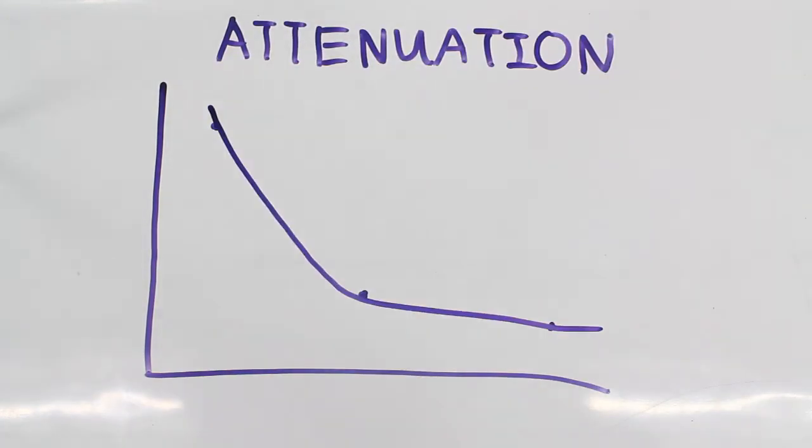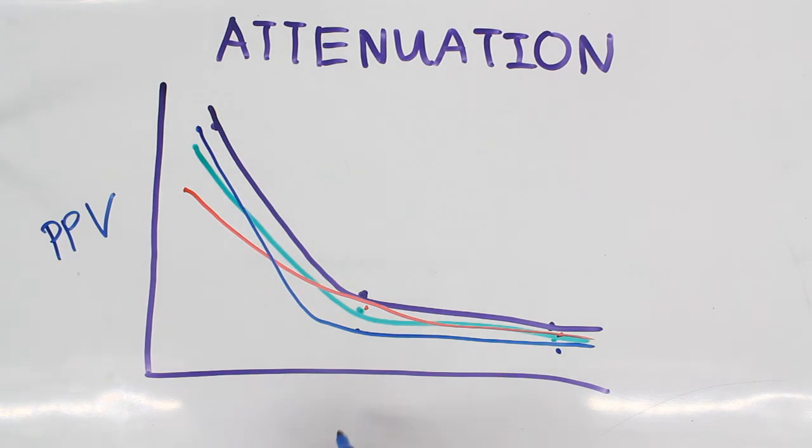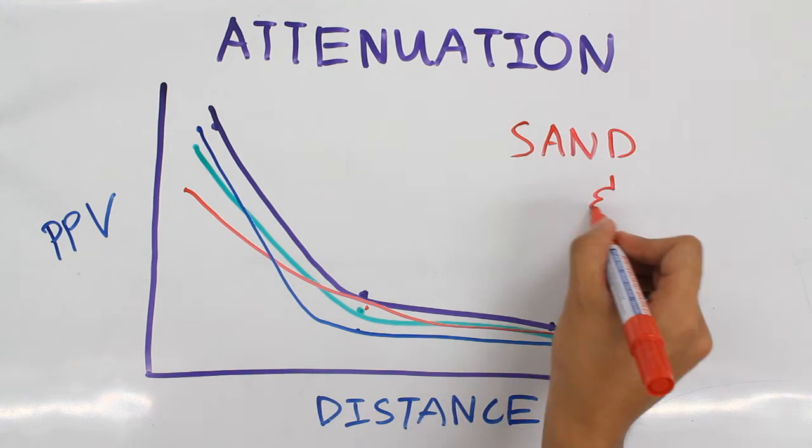This can be more clearly seen on the attenuation graph, or the decrease in magnitude as distance from the source increases. This behavior was found on both the sand and silt layers. A very interesting finding.